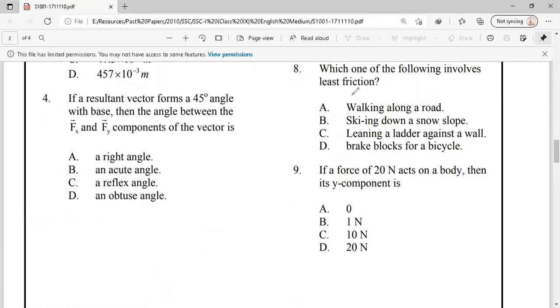Question number 8. Which of the following involves the least friction? Walking along a road, skiing down a snow slope, leaning a ladder against the wall and brake blocks of the bicycle. The most friction in the brakes, then static friction will be available, leaning a ladder and walking on the road will be normal friction. Skiing down a snow slope, the friction will be least.